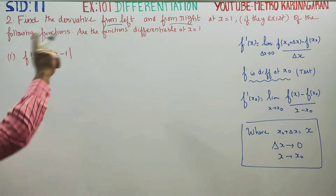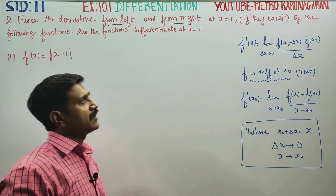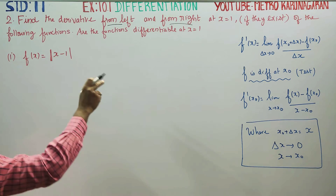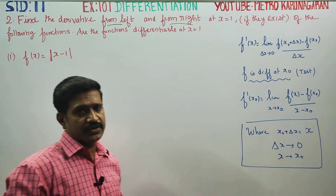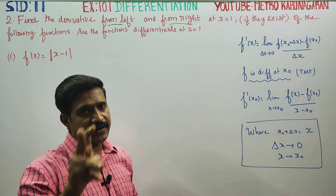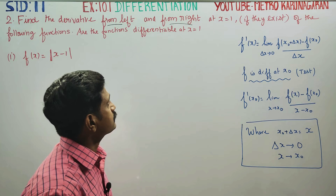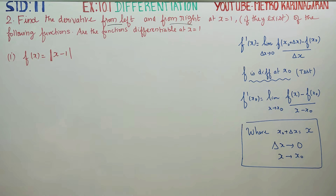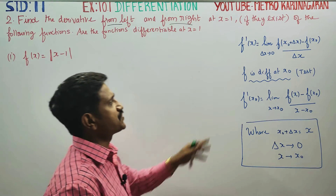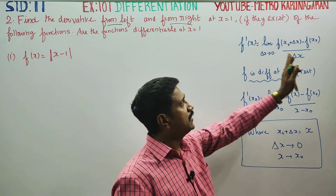If the derivative from the left side and the derivative from the right side are equal, then the answer will be that the function is differentiable. There are three parts to check: left and right differentiability. In the last video, if you look at the first summary, you will know how to find f'(x) and how to find derivatives.